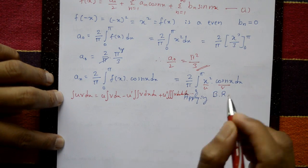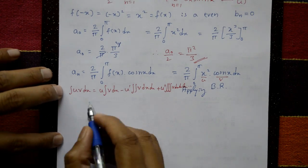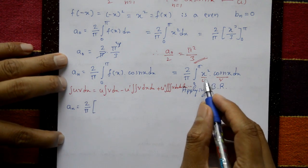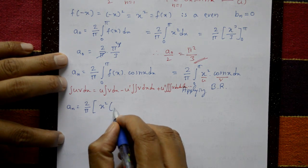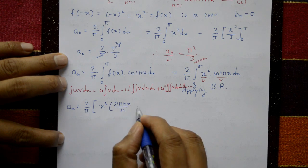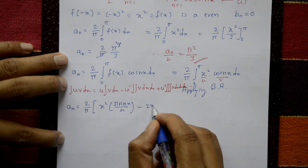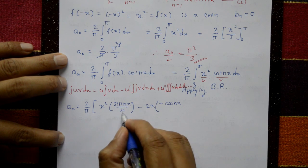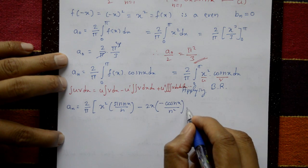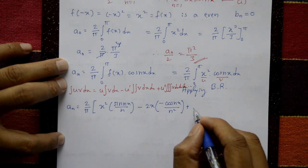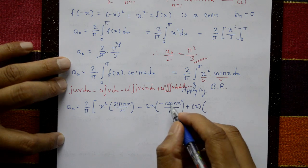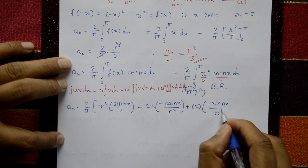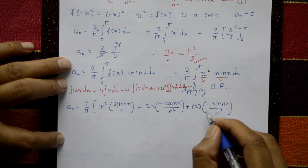Applying Bernoulli's rule: (2/π) [ x² · sin(nx)/n − 2x · (−cos(nx)/n²) + 2 · (−sin(nx)/n³) ] from 0 to π. The next term vanishes since differentiating the constant 2 gives 0.